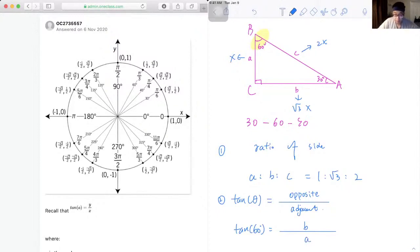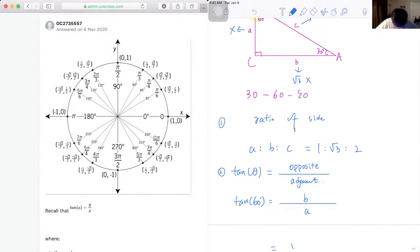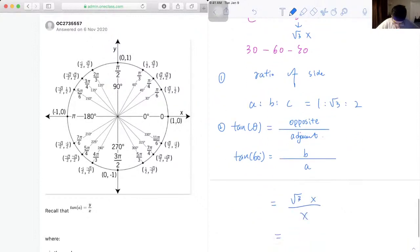Because we know c is the hypotenuse, so we know b is √3x, and a is just x, so tangent 60 is equal to √3.